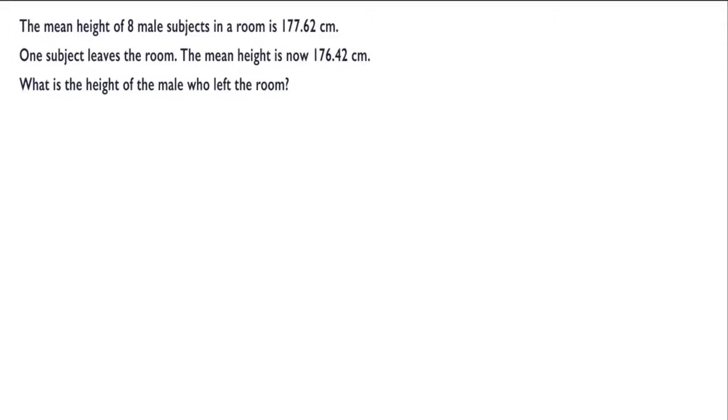In this question we have the mean height of 8 male subjects in a room is 177.62 cm. We are then told that 1 subject leaves the room and the mean height is now 176.42 cm. And the question is what is the height of the male who left the room?